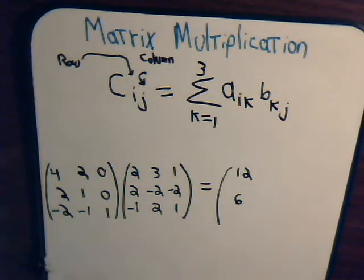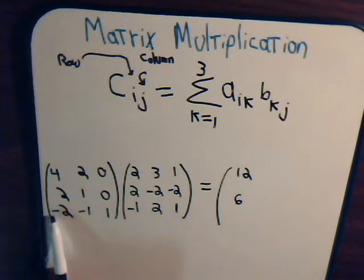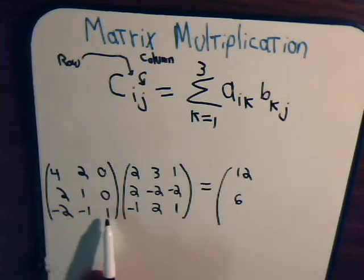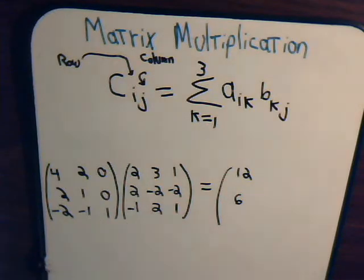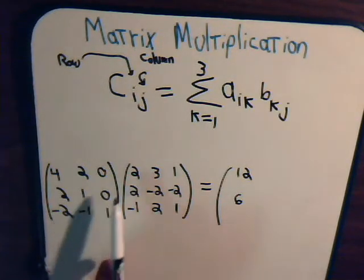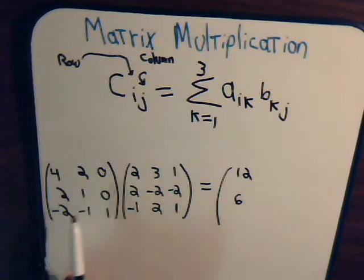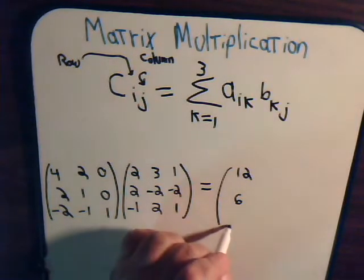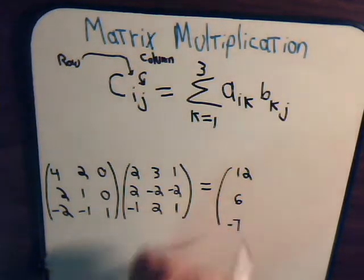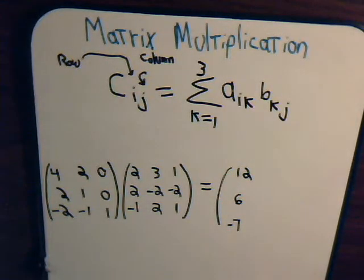Then to get the third number here in the column, we take the third row and go across the third row with the first column. Here we have negative four, plus negative two, that's negative six, plus negative one, that's negative seven.